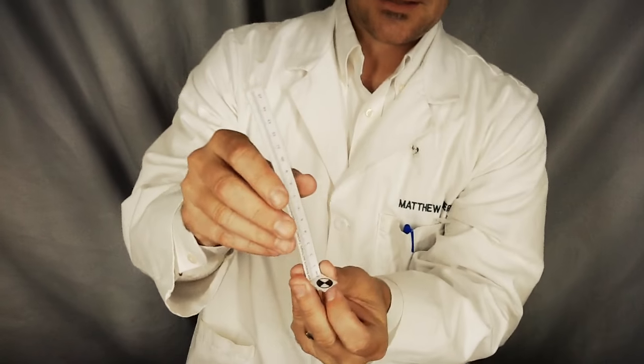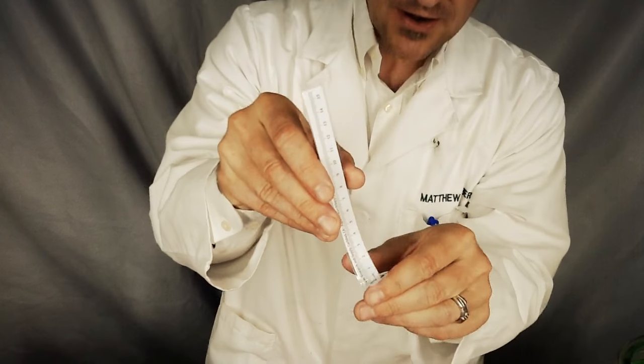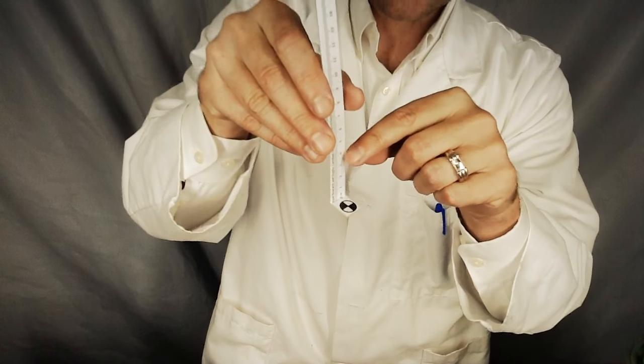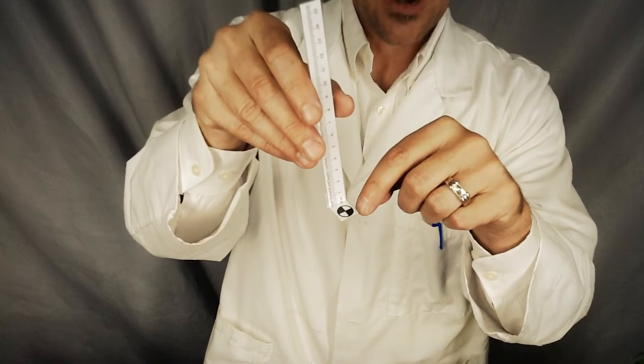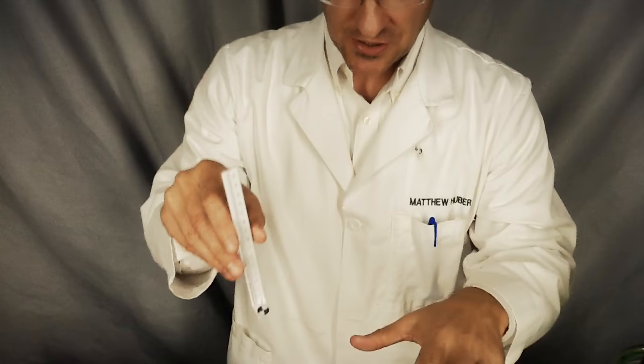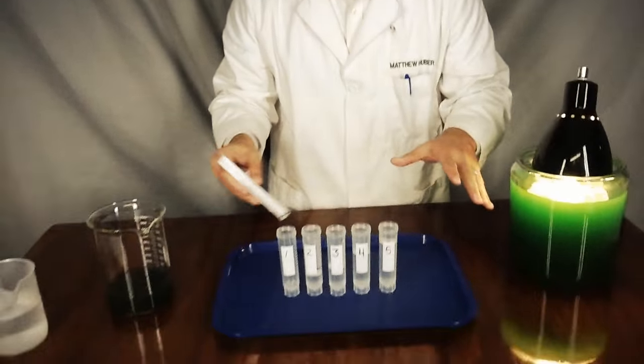What you do is take this Secchi stick and drop it into the water, and you mark the depth at which the target disappears. So we're going to use that here on some algae cultures.